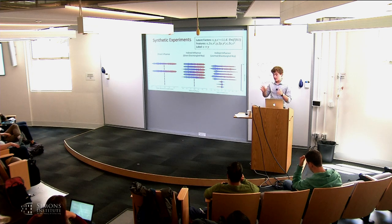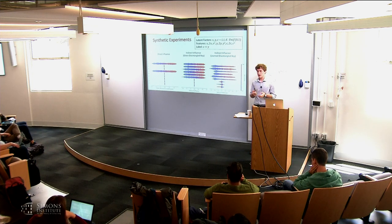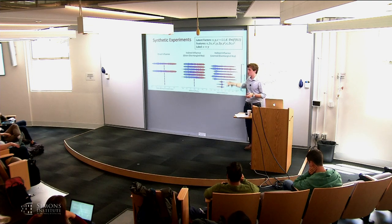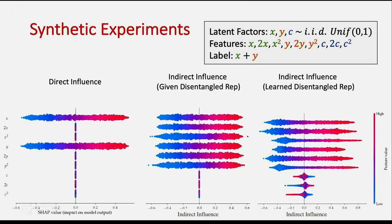When we don't have direct access to the disentangled representation and have to learn it, we still get the same general idea — it approximates the correct result — but a little noise creeps in. For example, it might become unsure whether C matters a little. When should we trust this audit? We consider the reconstruction error, because instead of passing x into the model we're passing x-hat, so if x-hat doesn't equal x we're not auditing on quite the correct point.